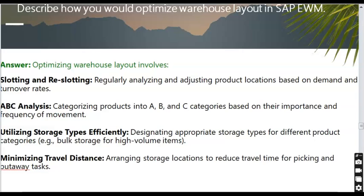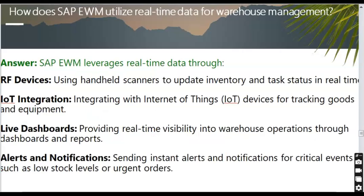Describe how you would optimize warehouse layout in SAP EWM. Optimizing warehouse layout involves slotting and reslotting by regularly analyzing and adjusting product locations based on demand and turnover rates, ABC analysis to categorize products into A, B, and C categories based on importance and frequency of movement, utilizing storage types efficiently for different product categories such as bulk storage for high-volume items, and minimizing travel distance to reduce picking time.